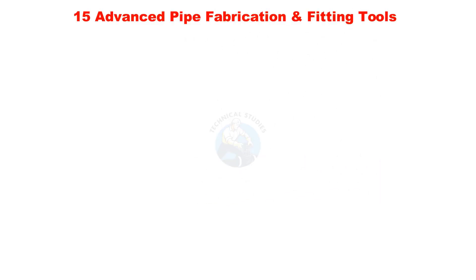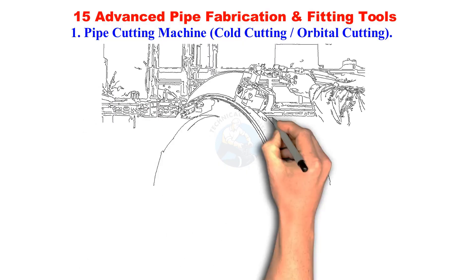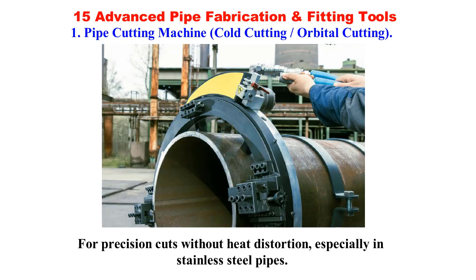Pipe cutting machine — cold cutting or orbital cutting. Used for precision cuts without heat distortion, especially in stainless steel pipes.